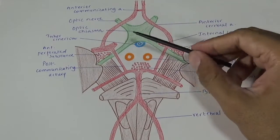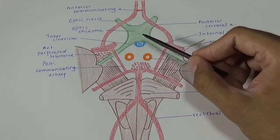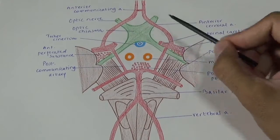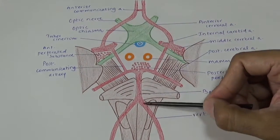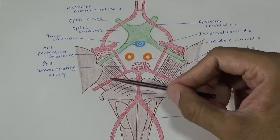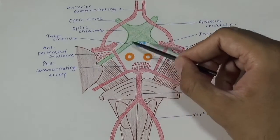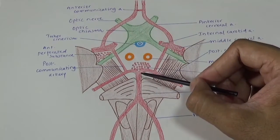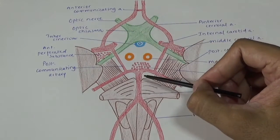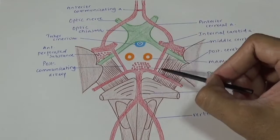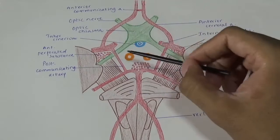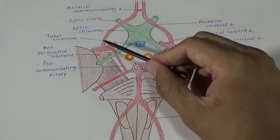Now let's see some of the portion of the circle of Willis. All around this interpeduncular fossa you will find arteries — branches of the internal carotid and the fourth part of the vertebral artery — forming the circle of Willis. This circle of Willis is found in the subarachnoid space. In relation to this interpeduncular fossa, the subarachnoid space is expanded and is termed a subarachnoid cistern, specifically the interpeduncular cistern.